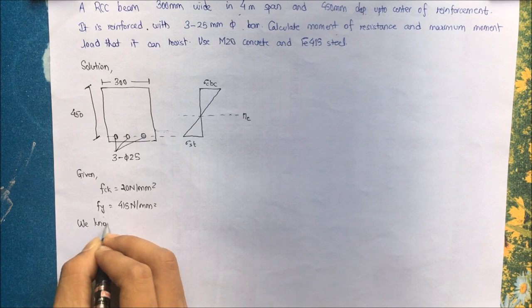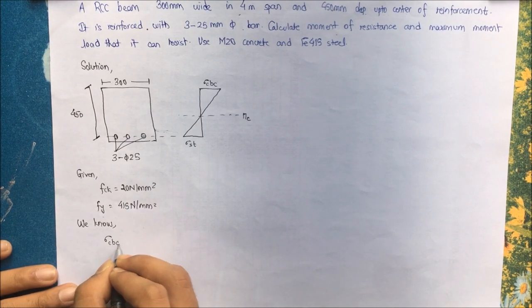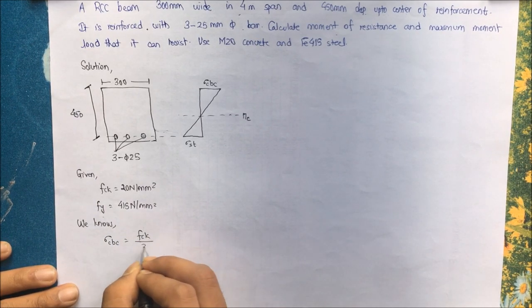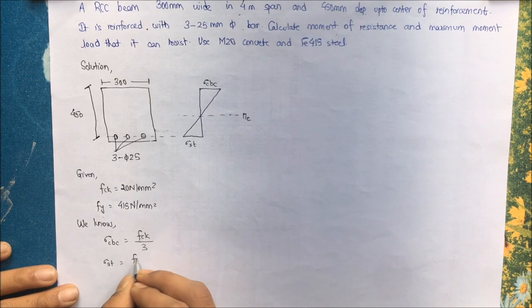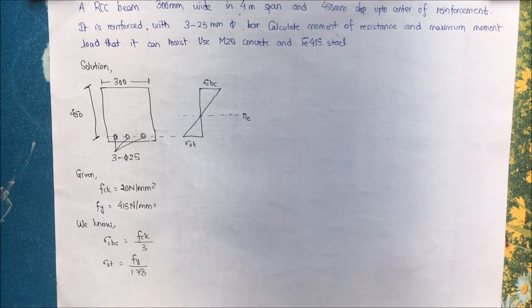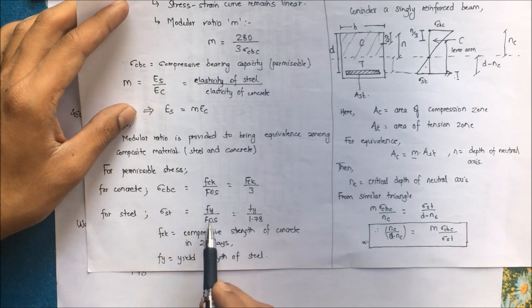Sigma cbc we can find by using fck by 3 and for sigma st fy by 1.78, 3 and 1.78 being the factors of safety.